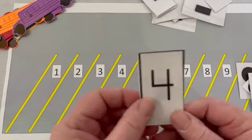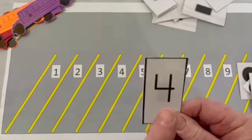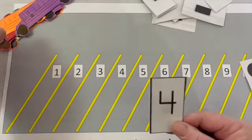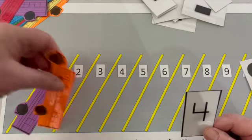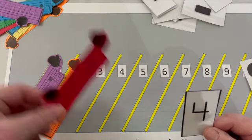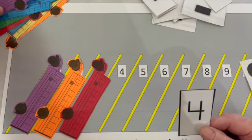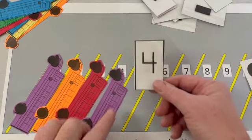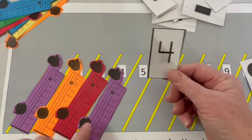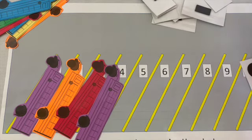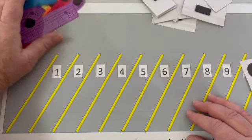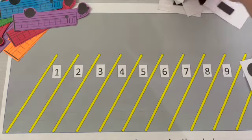The way you play is I'm gonna turn them over, pick a number. What number is that? Four. I'm gonna put four buses in the parking lot. One, two, three, four. See how the four that I picked and the four buses, they're both fours. One, two, three, four.